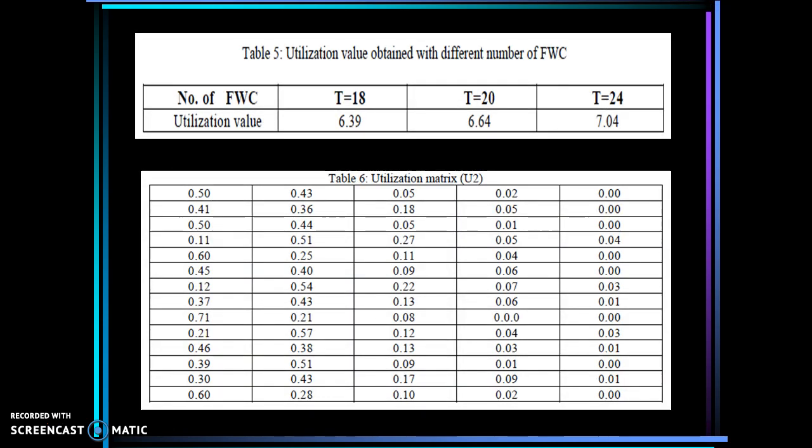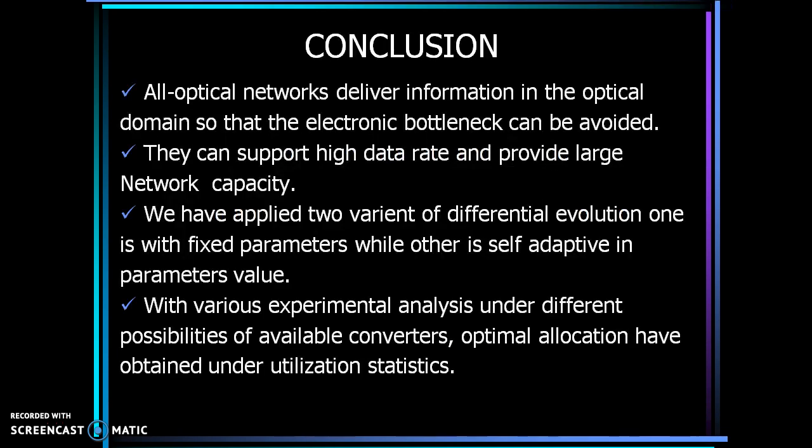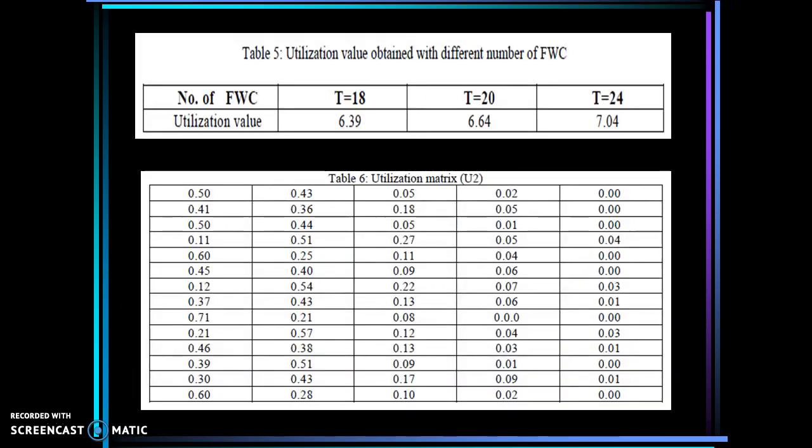Now, to define the environment to be dynamic, we have considered one more utilization matrix and applied the same algorithm and shown the variation with the number of full wavelength converters. So this is a comparison table giving us an idea with T equals 18, T equals 20, and T equals 24.